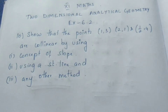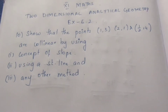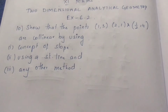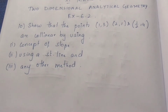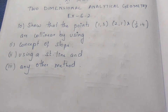Hello viewers, I am Maitli. In this 11th grade 2-dimensional analytical geometry, exercise 6, we will solve a question: Show that the points (1,3), (2,1), and (1/2, 4) are collinear.